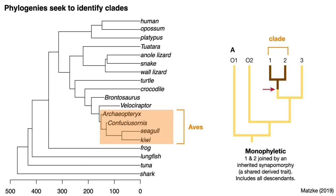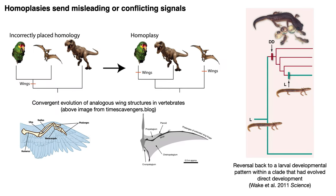When a small number of appropriate homologous characteristics are chosen, finding clades can be done by hand, but in practice biologists are interested in relationships among many taxa using numerous characters. We also need to account for homoplases, which are trait reversals, parallel evolution, or convergences, that can send conflicting or misleading signals compared to other characters.